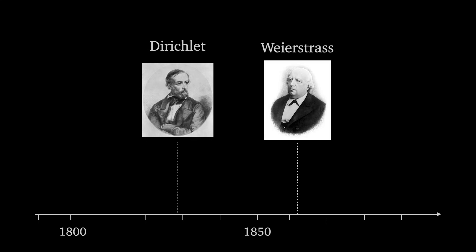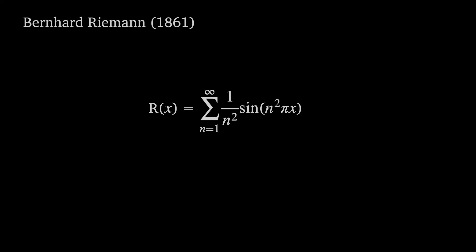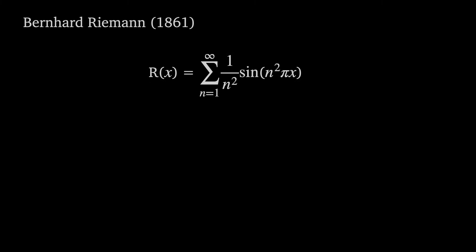In 1861, Carl Weierstrass was working as a professor in Berlin teaching Fourier series and analysis when he got the news that someone had found the answer. Riemann had announced that the function — the sum from n equals 1 to infinity of sine of n² π x over n² — is continuous but not differentiable for any x. The problem was he hadn't produced a proof.